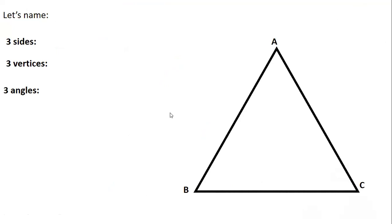Let's practice this exercise together. We have a triangle with the first vertex called A, the second vertex called B, and the third vertex called C. To name the sides, we name the lines using a starting point and an ending point. This line starts at A and ends at B, so it is called side AB. The second side starts at A and ends at C, and the third side is called BC.